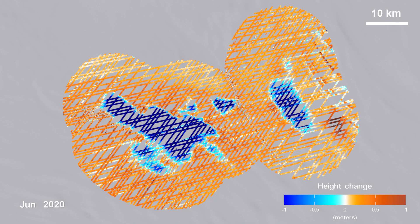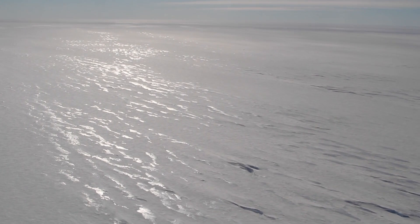Areas seen here in blue show that the surface of the ice is getting lower, which indicates that the lakes below are draining.